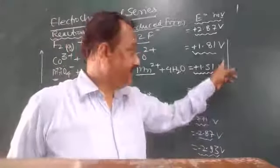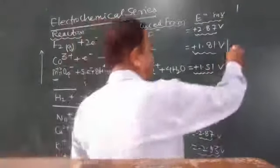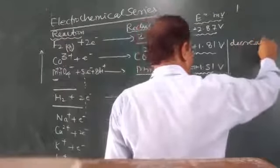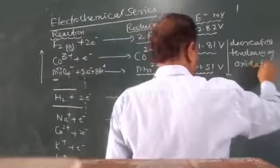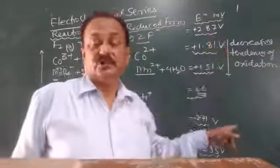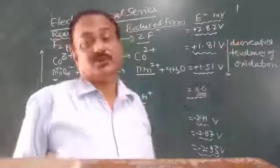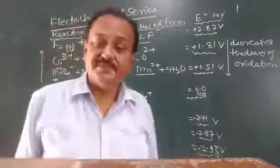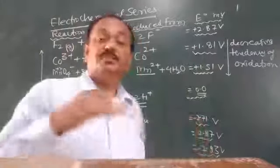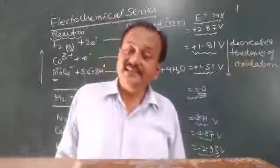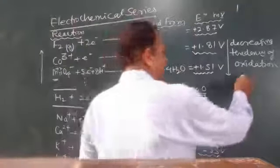I have drawn the arrow downward and upward. Children, this indicates the decreasing tendency of oxidation moving from top to bottom in the electrochemical series. The tendency of oxidation decreases. This series has been arranged in order of decreasing oxidation potential values. The opposite of this is that there will be an increasing tendency of reduction.